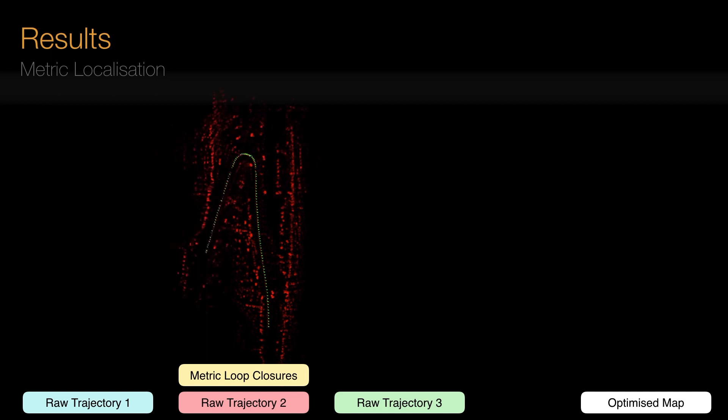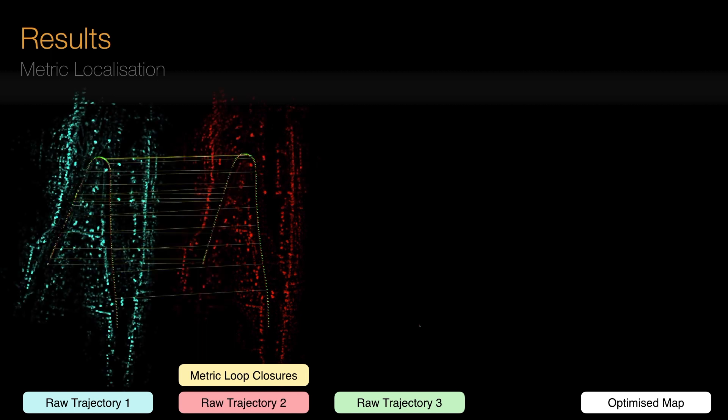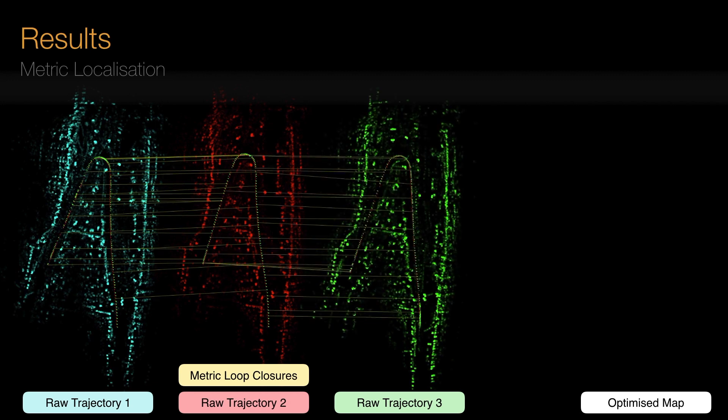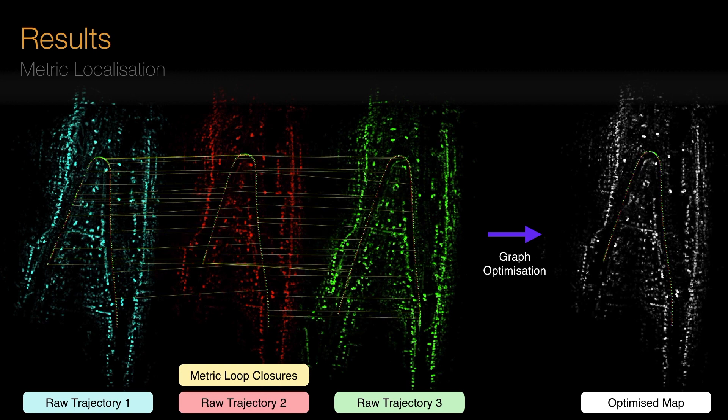When combined with metric localisation, we provide a full mapping system for radar in urban environments. When run on test datasets, we successfully optimise different trajectories simultaneously into one coherent map, at well over real-time speeds.